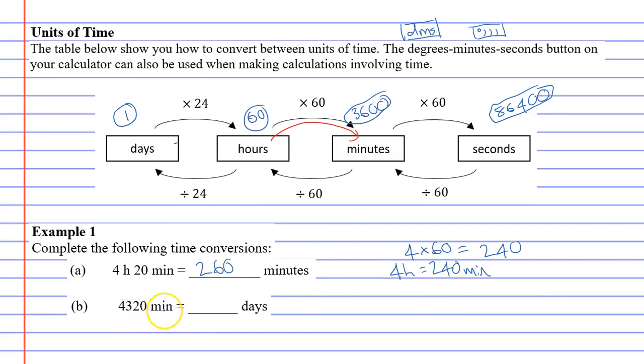Question B wants us to convert minutes into days. So we're going from minutes to days. We're actually going to take two steps to the left, and it tells us to divide by 60 and divide by 24. We'll take that number 4320, divide by 60 and divide by 24, and we can do it all in one calculation.